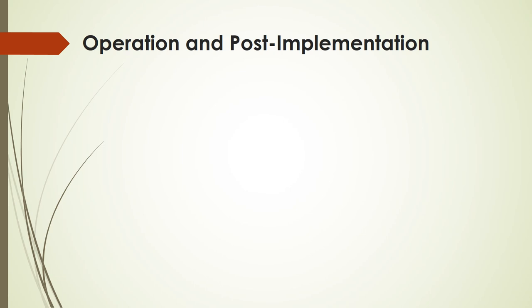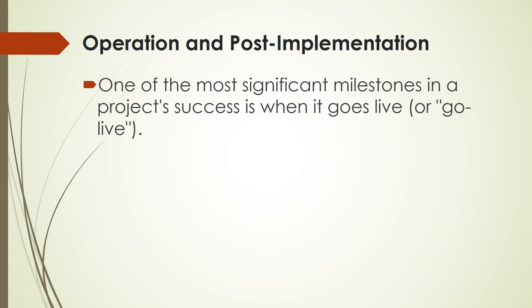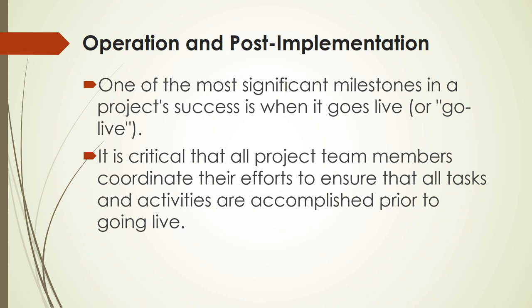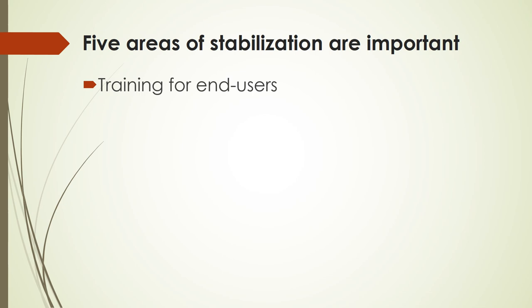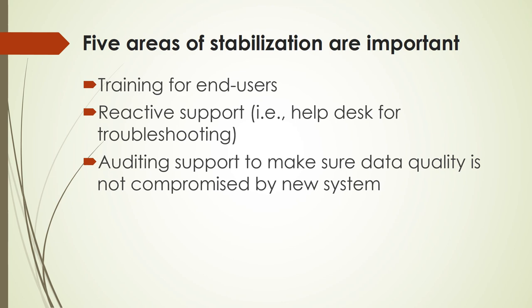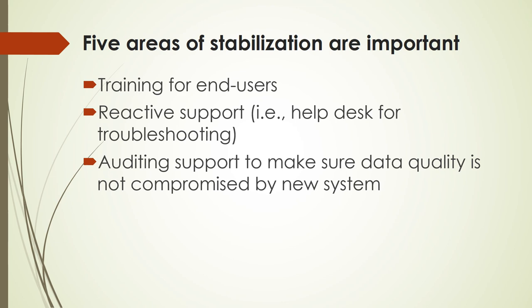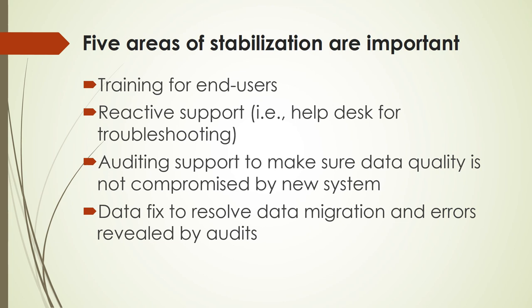For operation and post-implementation: one of the most significant milestones in a project's success is when it goes live. It is critical that all project team members coordinate their efforts to ensure all tasks and activities are accomplished prior to going live. Five areas of stabilization are important: training for end users; reactive support like a help desk for troubleshooting; auditing support to make sure data quality is not compromised by the new system; data fixes to resolve data migration errors revealed by audits; and new features and functionalities to support the evolving needs of the organization.